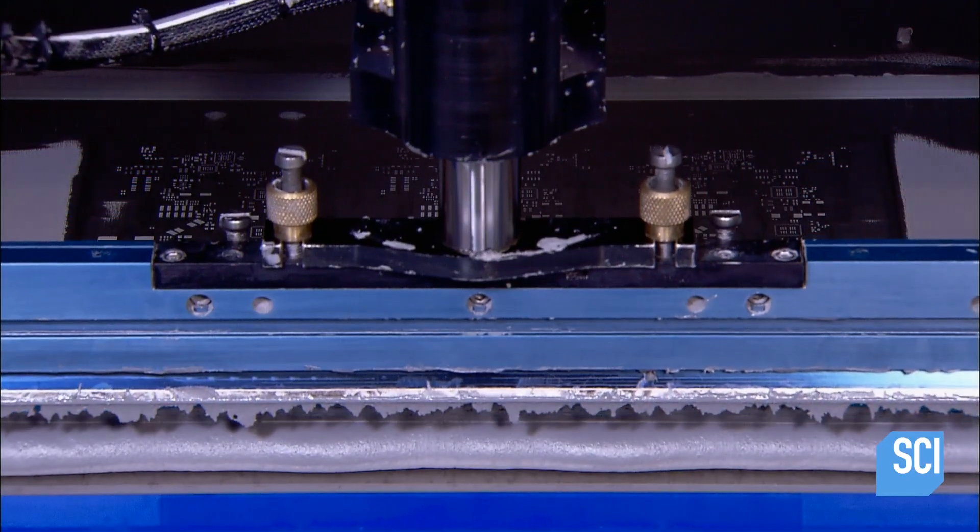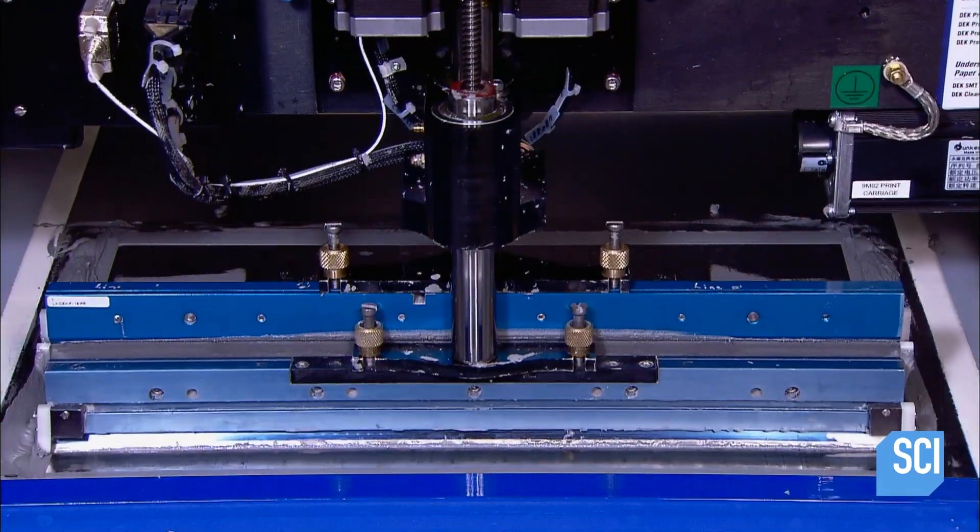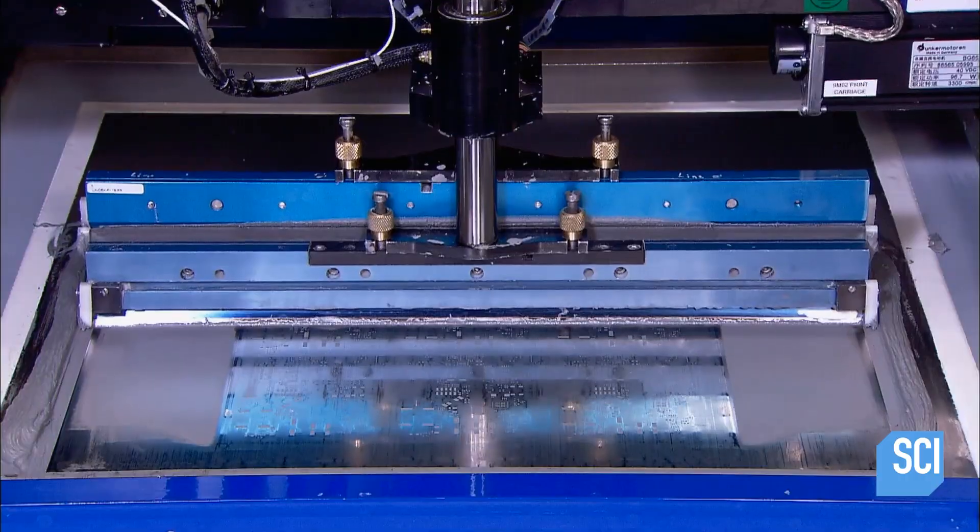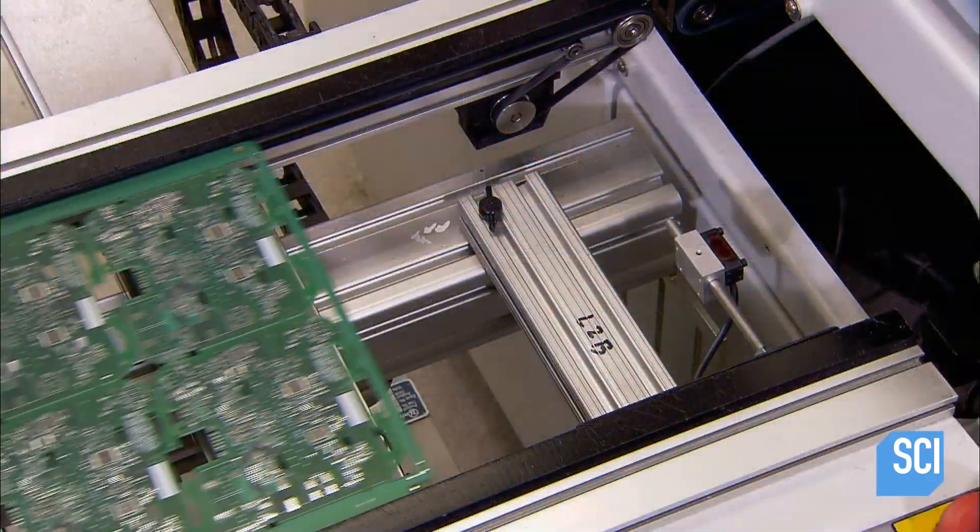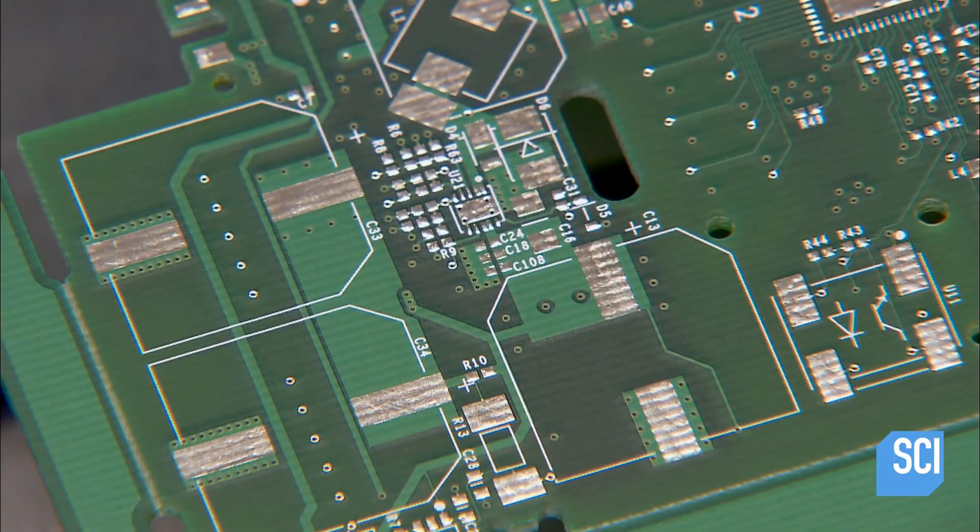The next machine applies a stencil in the pattern of the components to be mounted on the board, then spreads solder in paste form across it. The board now wears solder paste, shaped and positioned exactly to receive the upcoming components.